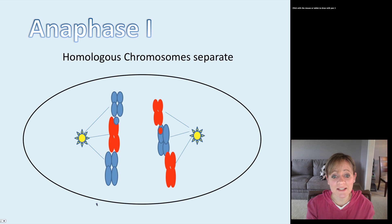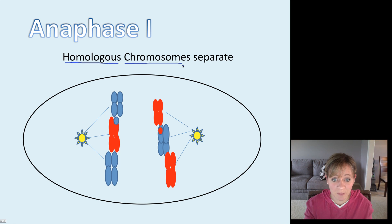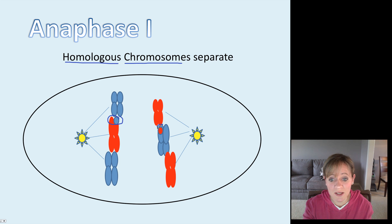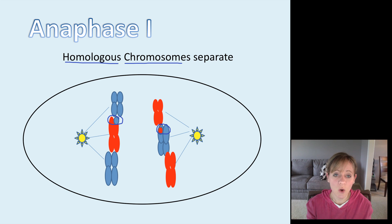Next is anaphase I. The homologous chromosomes are going to separate from one another — it's the homologous chromosomes that are separating; the pairs are splitting apart. Because of the crossing over event, that exchange of genetic material occurred, so the homologous chromosomes are now separating from one another during anaphase I.